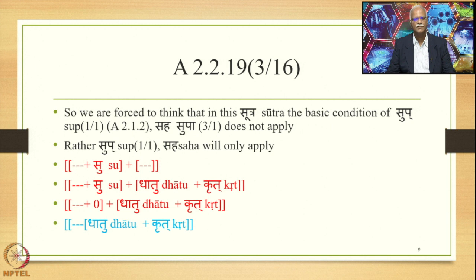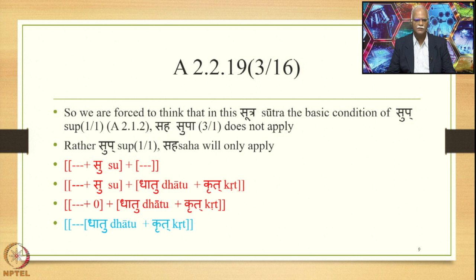The structure of the output derived by this Sutra can be shown as follows. In the Alaukika Vigraha, we have the Purva Pada with a Pratipadika plus Su, plus the second member of the compound having Dhatu plus Krith as its constituents, and there is no Supa at the end of the second member. The finally derived output is the Pratipadika in the Purva Pada plus Dhatu plus Krith, as witnessed in words like Grihastha, Godha, Kambalada, Kumbhakar, etc.